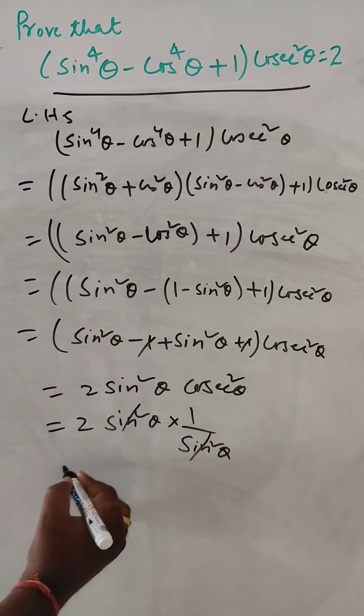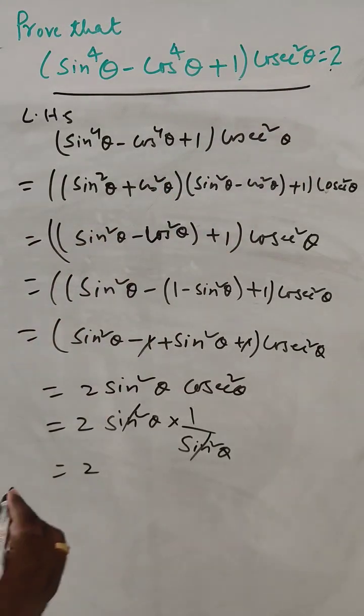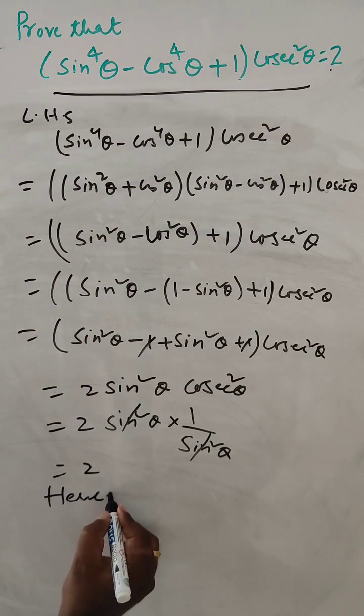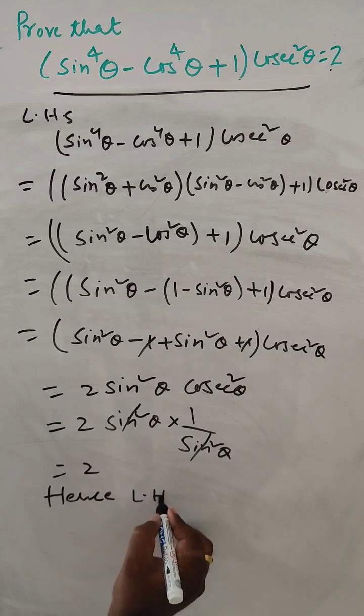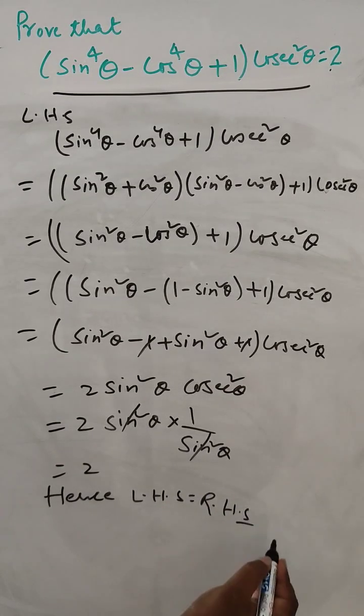So this is 2, so 2 is RHS value. So hence, LHS equal to RHS.